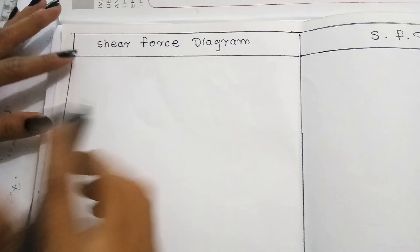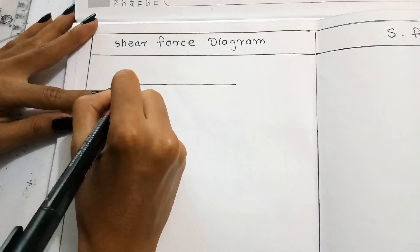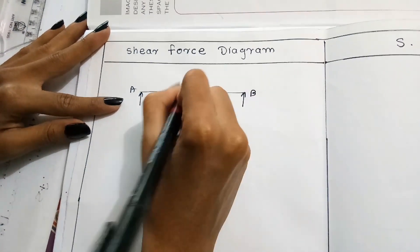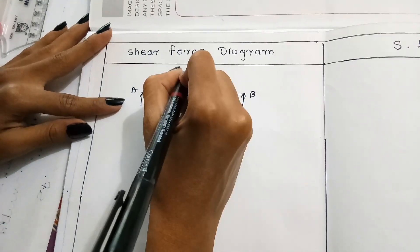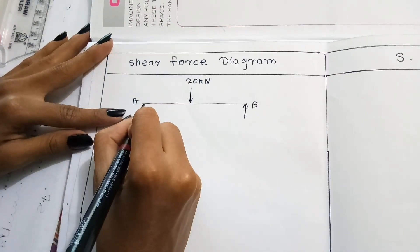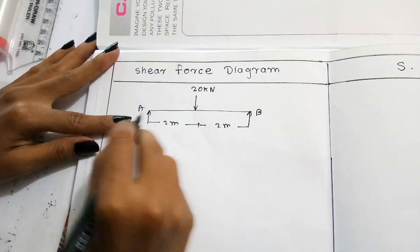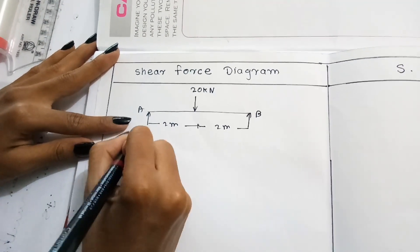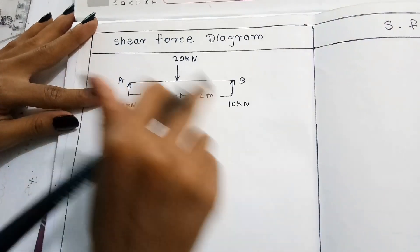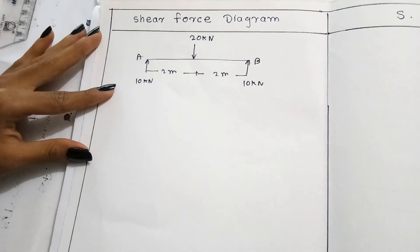Shear force diagram: a simply supported beam AB is given, with a point load of 20 kN acting at the center, 2 meters from A and 2 meters from B. Due to symmetry, RA is 10 kN and RB is 10 kN, and 10 plus 10 equals 20 kN. Now, how to draw the SFD and calculate shear force.